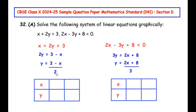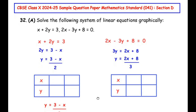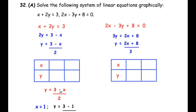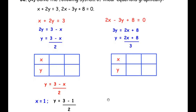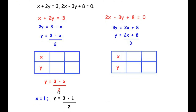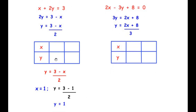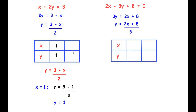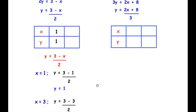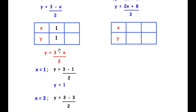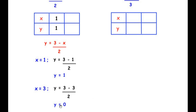For the first equation y = (3 - x)/2, since the denominator is 2, choose values of x so the numerator is easily divisible by 2. Taking x = 1: y = (3 - 1)/2 = 2/2 = 1, giving the point (1, 1). Taking x = 3: y = (3 - 3)/2 = 0/2 = 0, giving the point (3, 0). We now have two coordinates for the first equation.